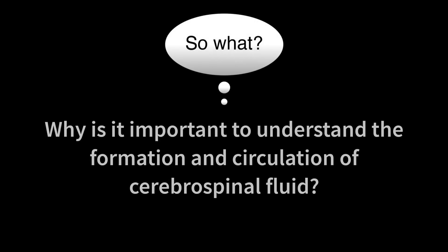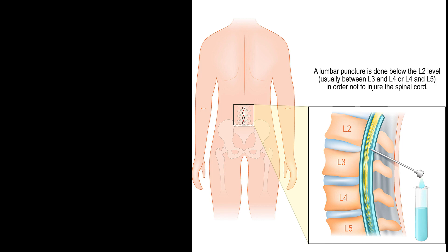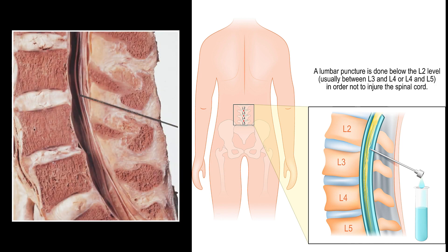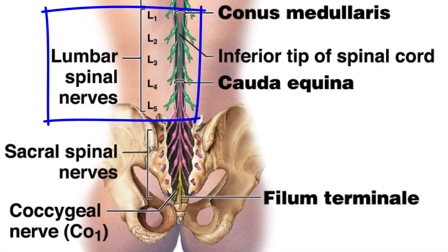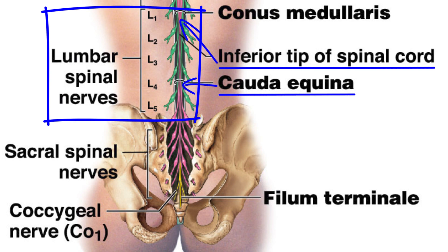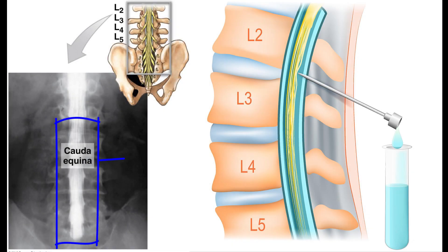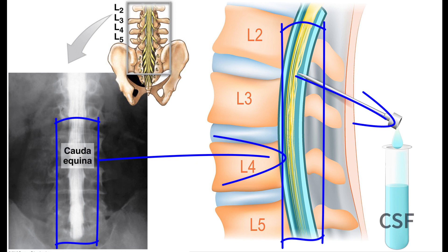Why is it important to understand the formation and circulation of cerebrospinal fluid? This information is crucial to understanding a spinal tap, also called a lumbar puncture, a test used to diagnose certain health conditions. In this clinical procedure, a needle is inserted between two lumbar vertebrae into the subarachnoid space. The lumbar region is the best place to conduct this procedure as it is inferior to the spinal cord, as well as the location of the cauda equina. This area provides the clinician with enough space for safe removal of a CSF sample to diagnose serious infections such as meningitis — an infection of the meninges. A lumbar puncture can also be used to inject anesthetic medications or chemotherapy drugs into the cerebrospinal fluid.